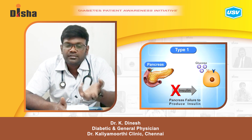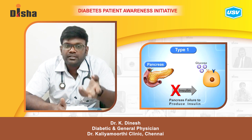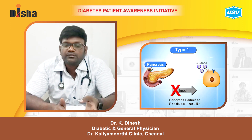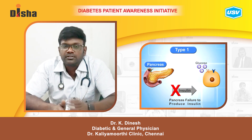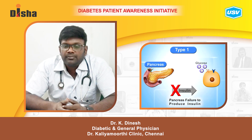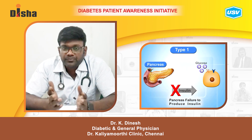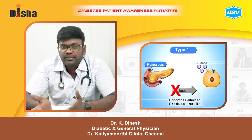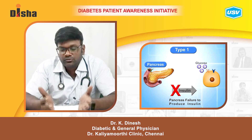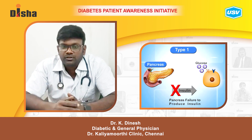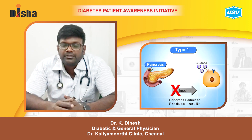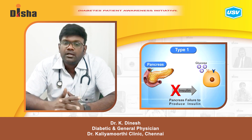In the autoimmune system, the immune system's own cells end up killing itself. Type 1 diabetes is also an autoimmune disorder which occurs in children.